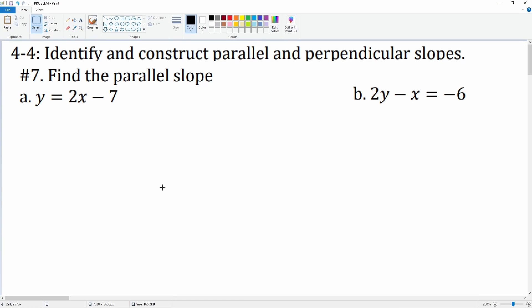In lesson 4-4, you're going to identify and construct parallel and perpendicular slopes. Number 7: find the parallel slope. Given this equation, when we see y equals 2x minus 7...